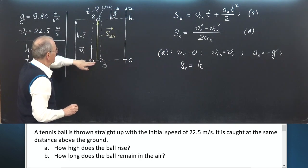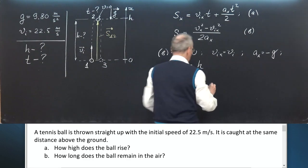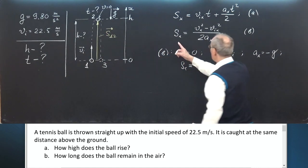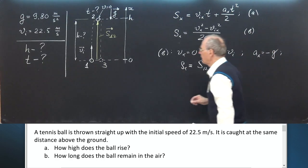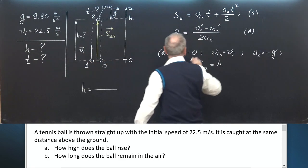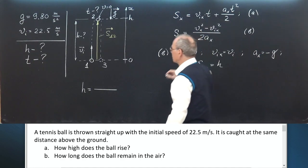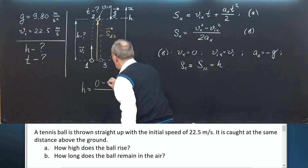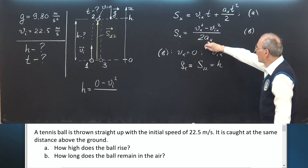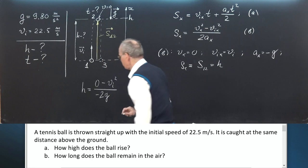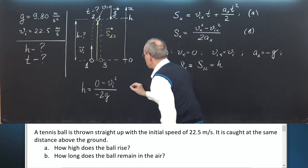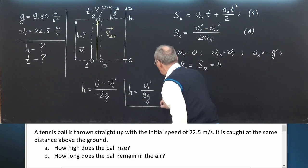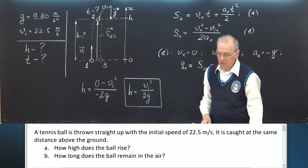So, we have instead of Sx, we write H. Instead of Vx, we write 0. Instead of V initial x, we write V initial squared. And instead of 2ax, we write minus 2g. And finally, we write H equals V initial squared over 2g. This is the answer to the question, how high does the ball rise?